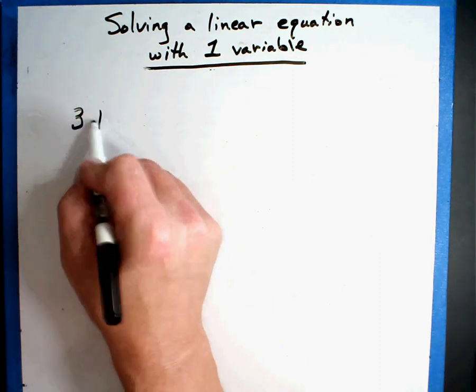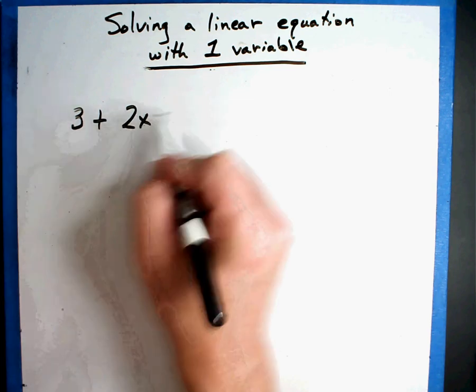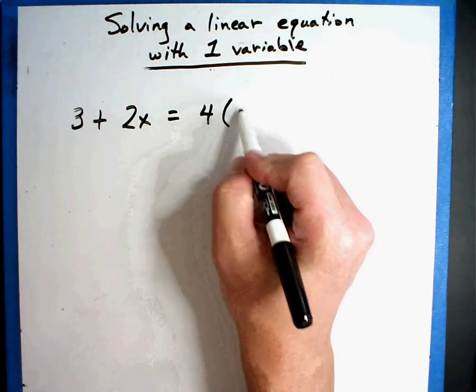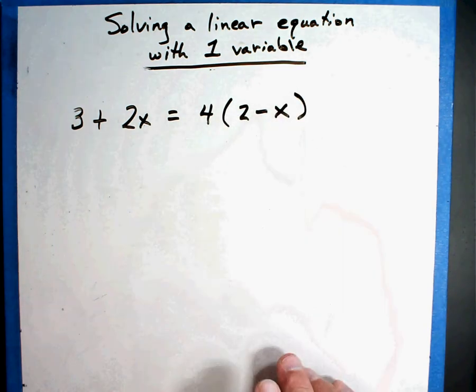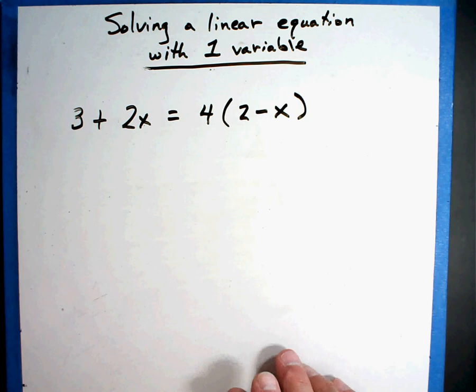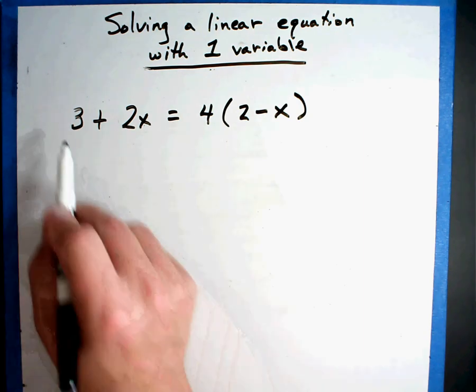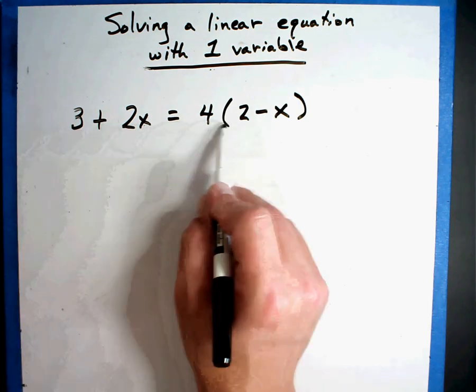3 plus 2X equals 4 parentheses 2 minus X. Now if I go too fast, pause the video, write the equation and then turn the video back on. Don't let me get too far ahead of you. All right as I look at the equation, oops there's parentheses.